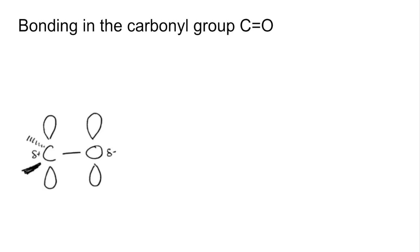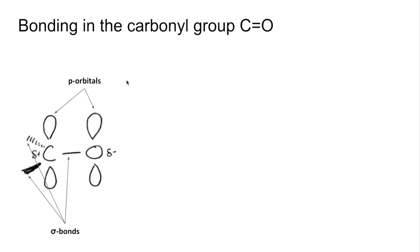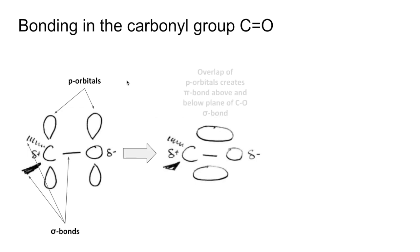We can move on to the bonding in the carbonyl group now. Around the carbon there are three sigma bonds — two sigma bonds to other atoms and a sigma bond to the oxygen, which is the direct end-to-end overlap of the orbitals. We've also got a p orbital on the carbon and a p orbital on the oxygen. Remember, a p orbital is the entire figure-of-eight shape — an upper lobe and a lower lobe. The p orbitals overlap side to side, creating a pi bond formed above and below the plane of the C–O bond.